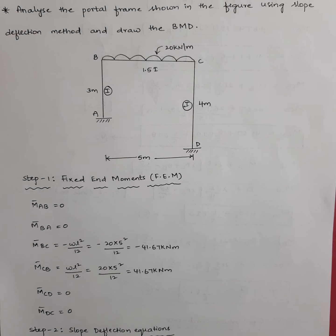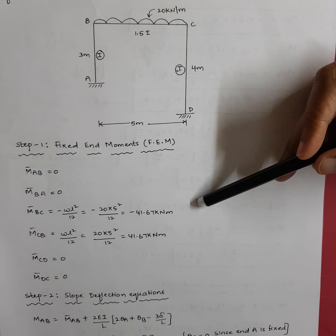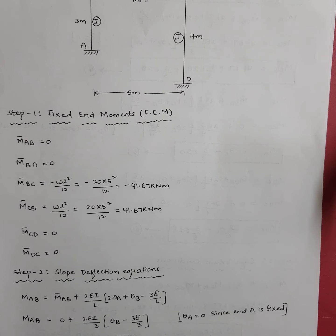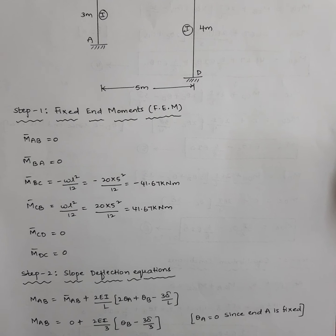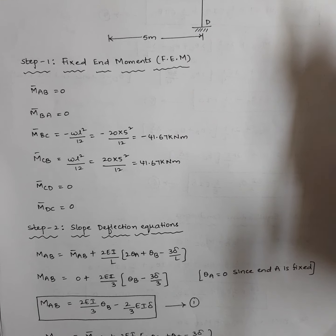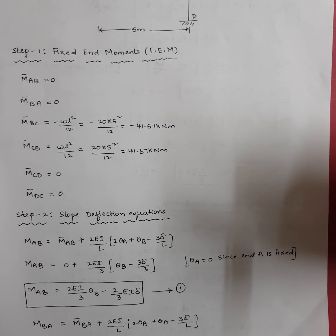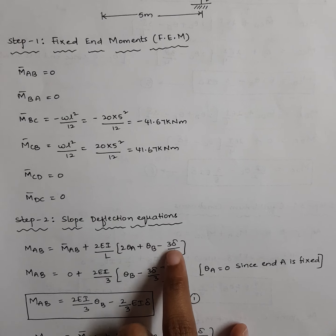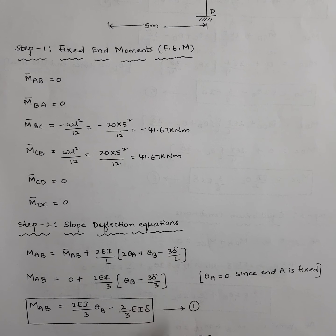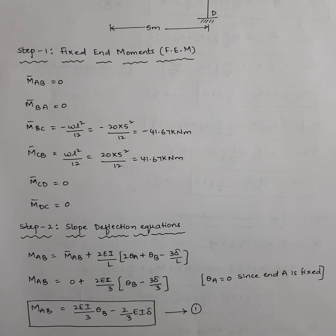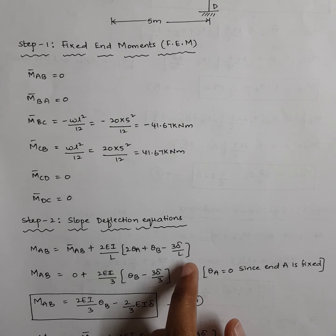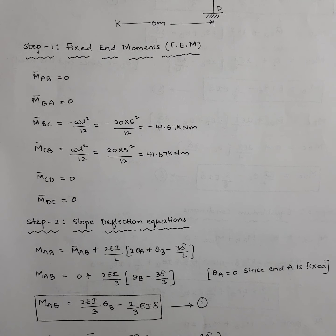Step 2 is writing the slope deflection equations. We have six end moments, so we get six slope deflection equations. For columns, since they are subjected to relative displacement (sway), we must include the delta term. For the beam, delta is zero because the beam does not sway — only the columns sway. So when writing slope deflection equations for columns, delta must be included.